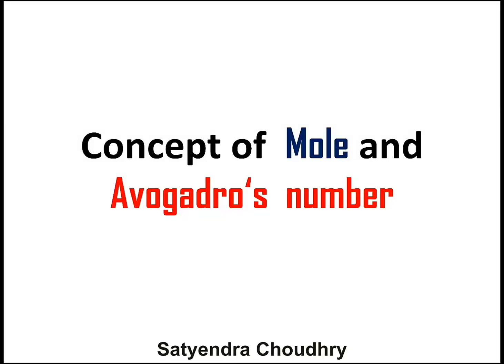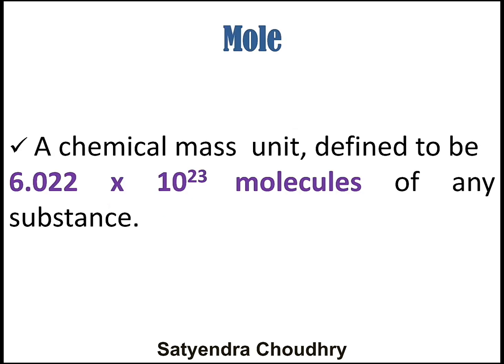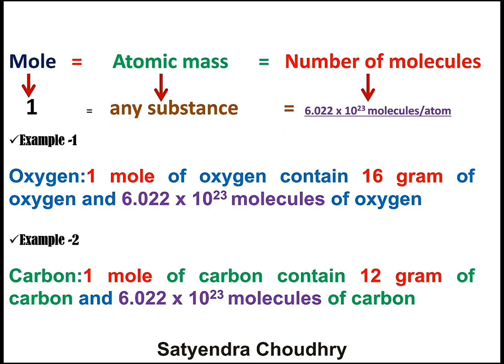In this lecture we will discuss the concept of mole and Avogadro's number. Mole is a chemical mass unit and you can define it as: one mole of any substance contains 6.022 × 10²³ molecules. Here you must know the relationship between mole, atomic mass, and number of molecules present in a substance.